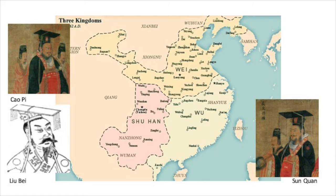Cao Cao died in the year 220. After his death, his son Cao Pi forced Emperor Xian to abdicate from the throne, marking the end of the Han Dynasty. Then Cao Pi claimed the throne and established the Wei Kingdom in the north. In the following year, Liu Bei established the Shu Han Kingdom in the southwest, and several years later, Sun Quan also titled himself Emperor and founded the Wu Kingdom. Among these three kingdoms, Wei was the strongest, but not strong enough to conquer the other two. Shu Han was the weakest, but still capable of launching a full-scale invasion toward Wu Kingdom and several northern expeditions against Wei.